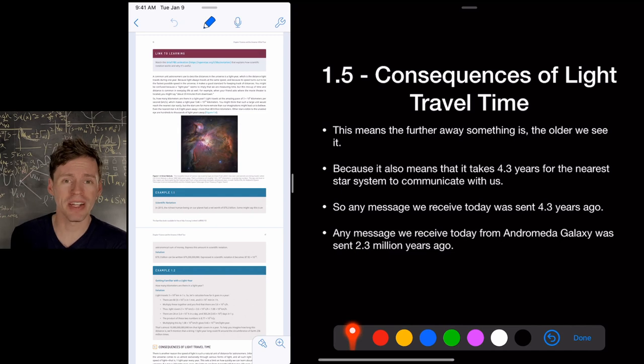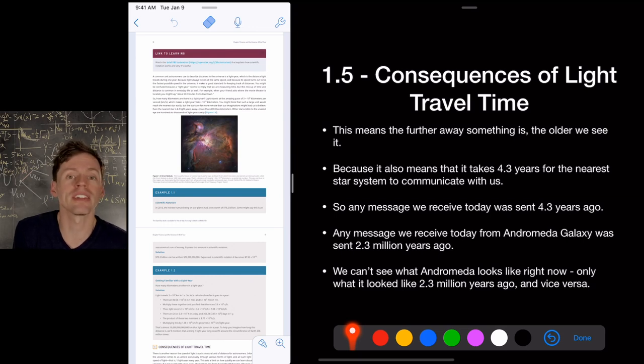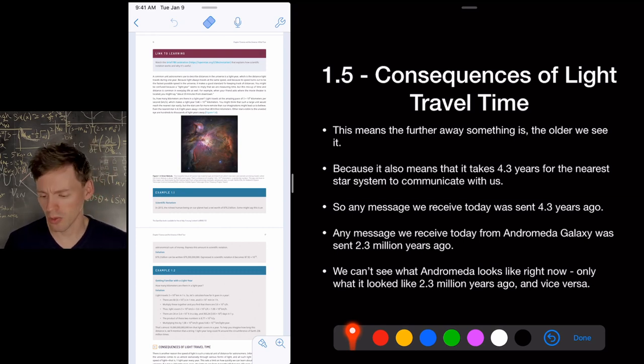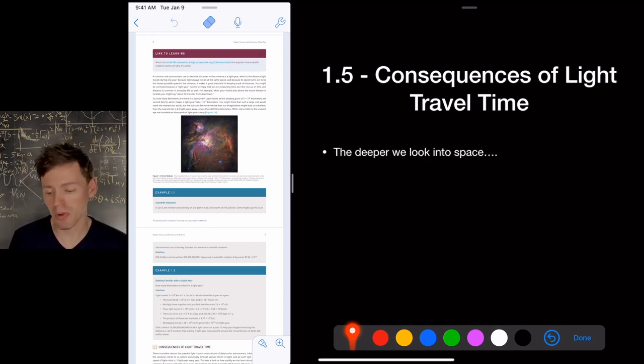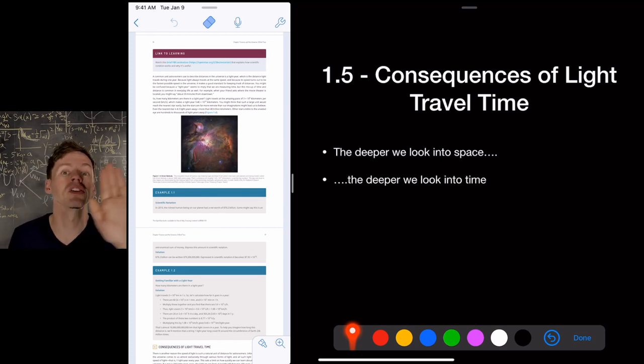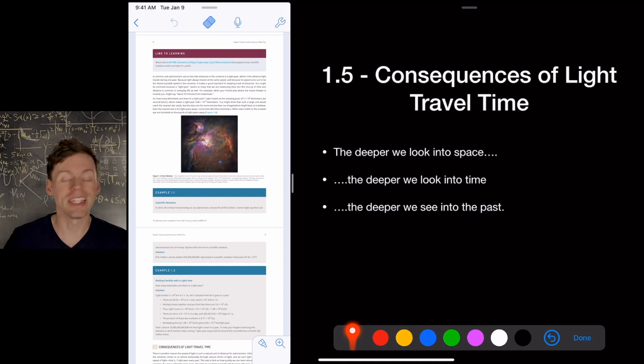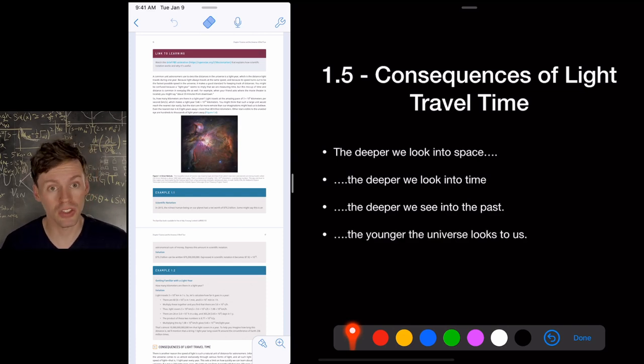Whatever happened in Andromeda Galaxy, we're seeing it as it was 2.3 million years ago because Andromeda Galaxy is 2.3 million light years from us. That's incredible. That means we don't know what Andromeda looks like right now. We can't see the latest stars that have formed or the planets or if there's life on any of them. We don't know. And the same thing. They don't know about us. Anyone on Andromeda has no idea that humans exist because we haven't been around for 2.3 million years. They could see dinosaurs, but they can't see humans. Okay. This means that the deeper we look out into space, the deeper we look back into time, the deeper we see into the past, the younger the universe appears to us.